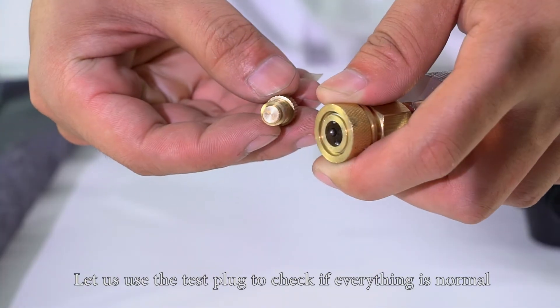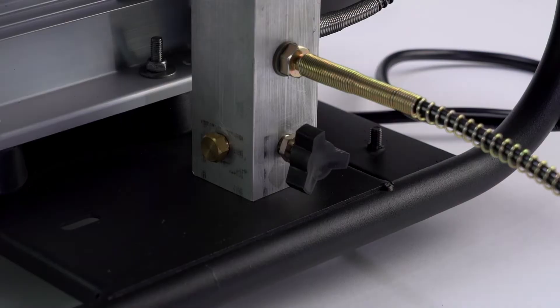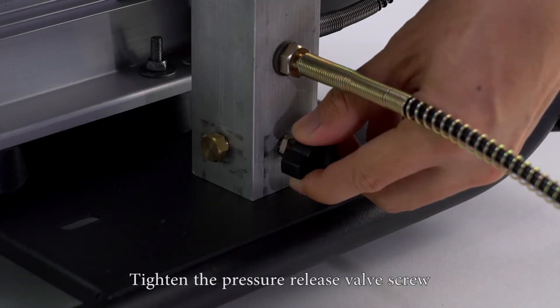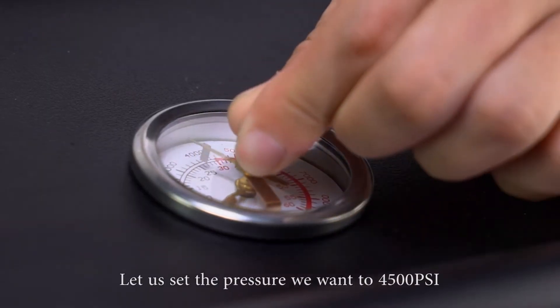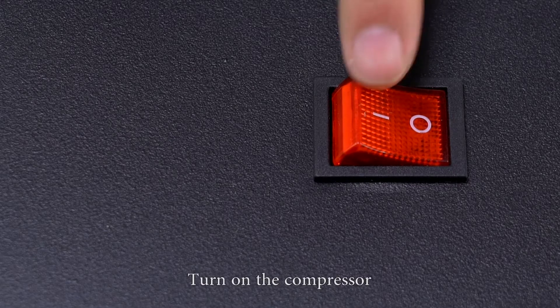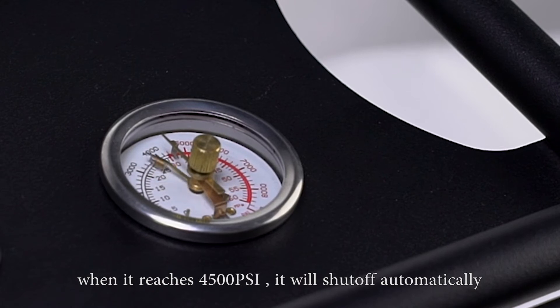Let's use the test plug to check if everything is normal. Connect the test plug and tighten the pressure release valve screw. Set the pressure to 4500 PSI. Turn on the compressor. The air pressure rises as expected. When it reaches 4500 PSI, it will shut off automatically.